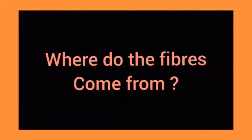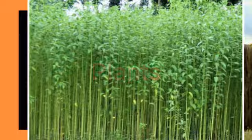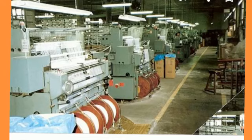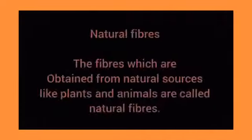Now, the question is: where do the fibers come from? Well, fibers are obtained from plants and animals, or through a chemical process done in a factory. Thus, there are mainly two types of fibers: natural fibers and synthetic fibers.